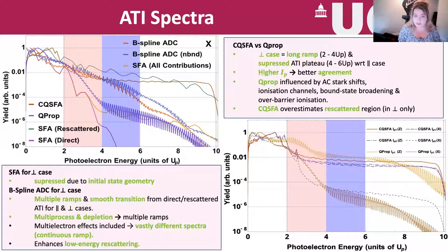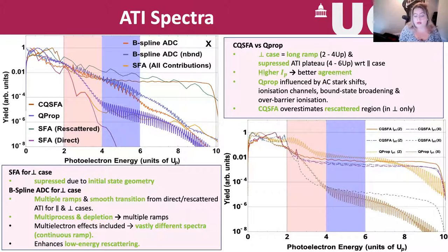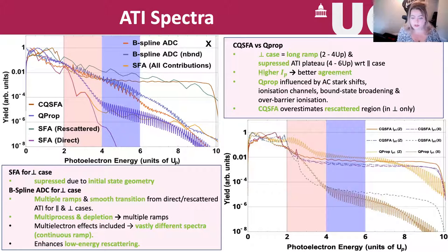Now we look at ATI spectra. On the left we have ATI spectra for all models covered in our paper and mentioned in this talk. On the right is a comparison of CQSFA and QPROP using the two different IPs. The observations and conclusions shown support the work in the paper and are consistent with what we've discussed for the PMDs.